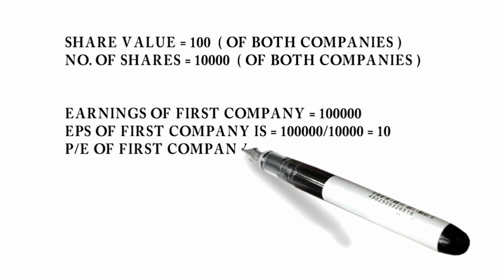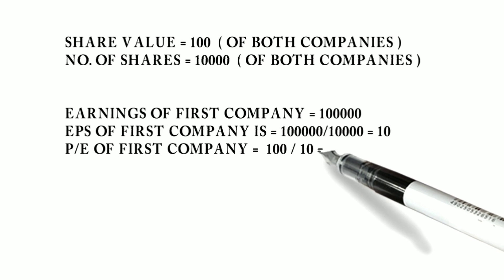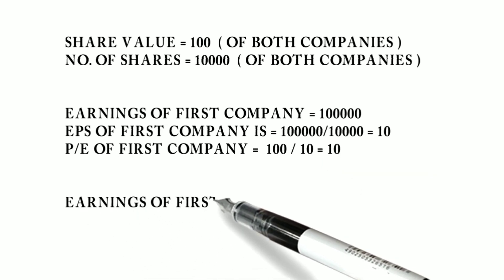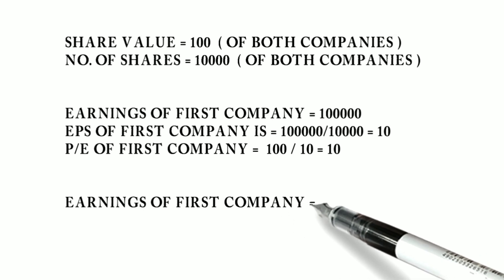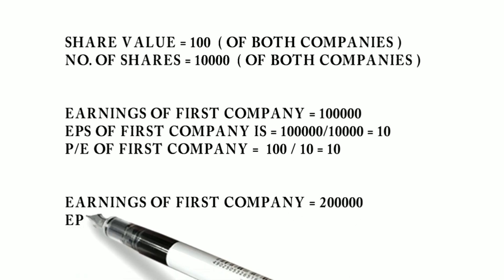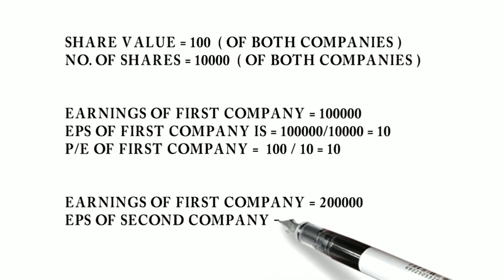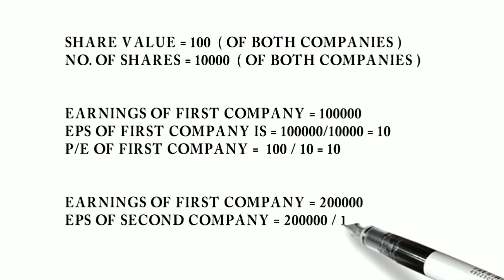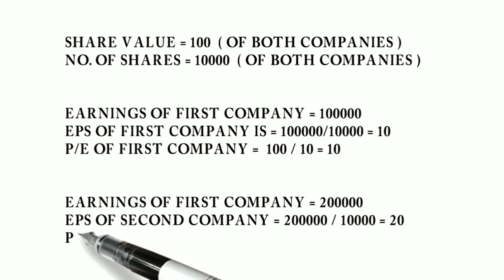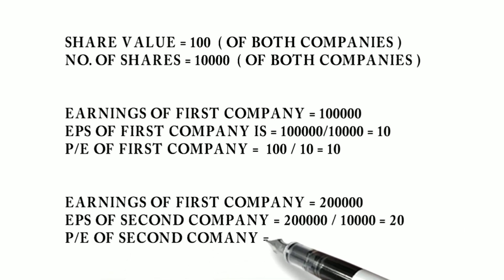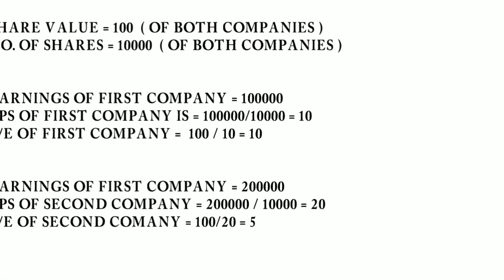For the PE ratio, the share price of 100 is divided by the EPS. For the second company, the total income is 2 lakhs. The EPS is 2 lakhs divided by 10,000. The PE ratio is 100 divided by 25.